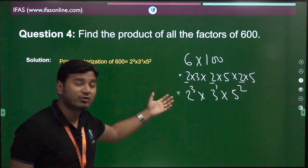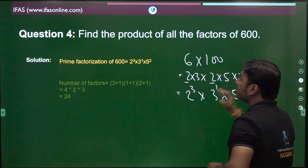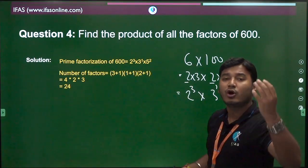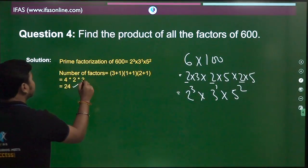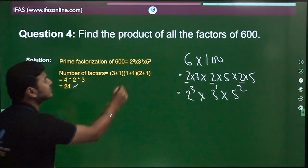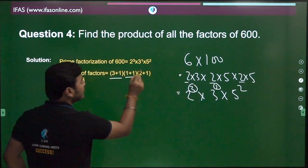Now, what you have to do is find the number of factors. And we already know how to find the number of factors: If 3 is here, then 3 plus 1. If 1 is here, then 1 plus 1. If 2 is here, then 2 plus 1.